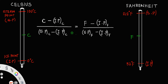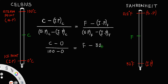For scale conversion, we always use this relation: the temperature minus the lower point, divided by the upper point minus the lower point, is equal for both scales. Substituting the values: C minus 0 divided by 100 minus 0, equals F minus 32 divided by 212 minus 32. So this gives us C divided by 100 equals F minus 32 divided by 180.